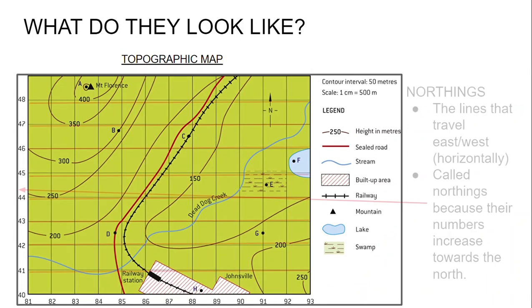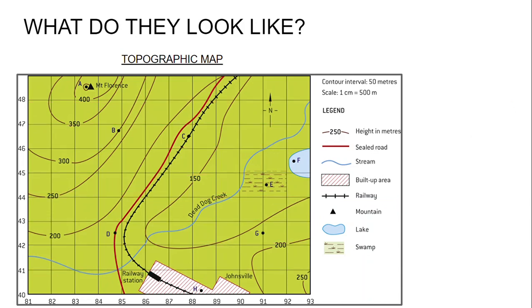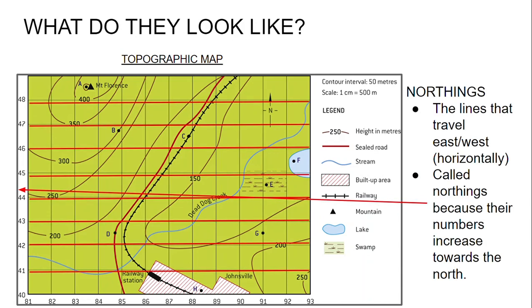Next, we have northings. You can see that the northings travel horizontally, or east to west, but they're called northings because their numbers increase as they go towards the north. So you can see here over on the side they go from 40 to 41 to 48. These are the basic features of a topographic map.